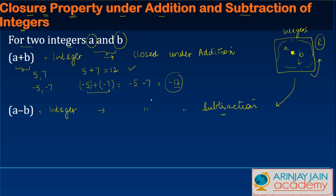which gives us minus 12, and that is also an integer. How about minus 5 and plus 7? We get minus 5 plus 7. Since the signs are different, we find the difference — which is 2 — and assign the sign of the larger number, which is plus. So 2 is also an integer. In all three cases — both positive, both negative, and one of each — the result is always an integer. So we say that a plus b is also an integer, and the integers are closed under addition.